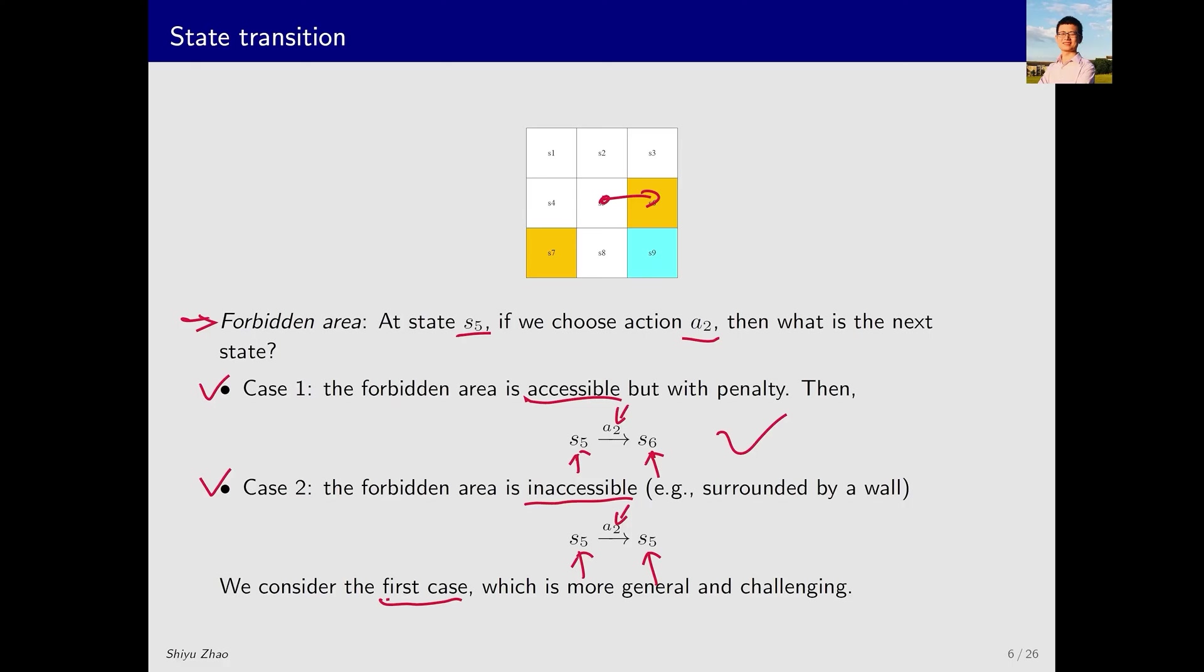This case is more generalized and challenging compared to the second. Why? Because excluding some states would reduce the number of states, making the policy search easier. If we suppose the forbidden area accessible, it might lead to interesting behaviors. For instance, although entering a forbidden area incurs a punishment, it might provide the shortest path to the target area. Hence, the agent may want to take the risk of entering the forbidden area to reach the target more quickly. This interesting behavior will be discussed later.